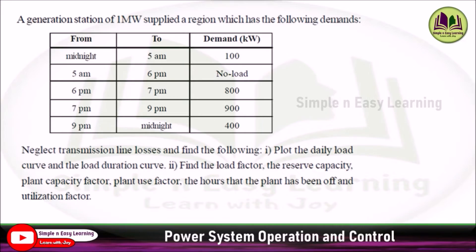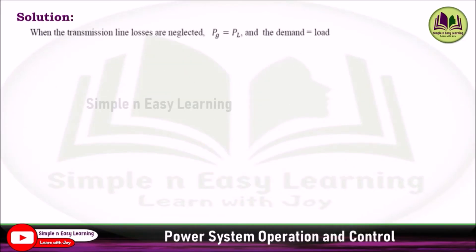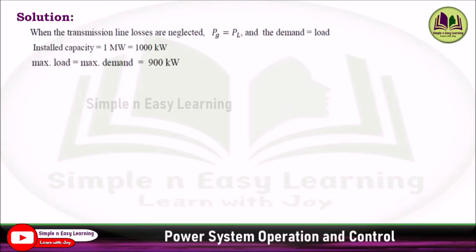We will find each one by one. When transmission line losses are neglected, the generated power is equal to the demand. Installed capacity is 1 megawatt, that is 1000 kilowatt. The maximum load, that is maximum demand, is equal to 900 kilowatt, as we can understand from the given table.